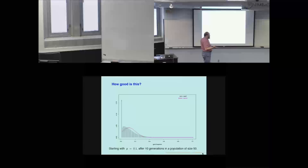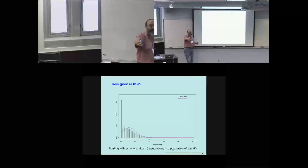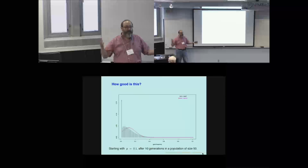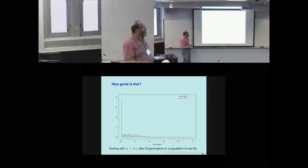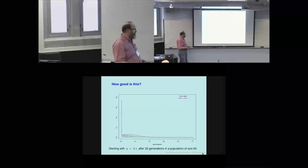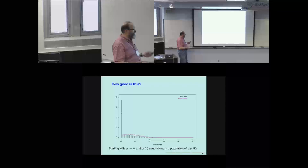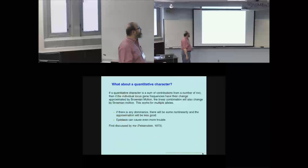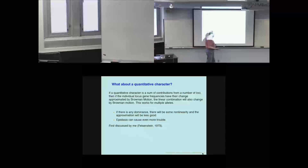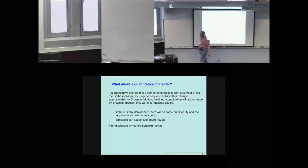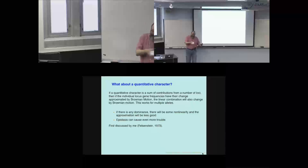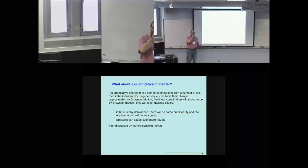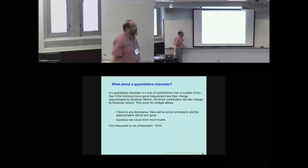We're sort of stuck with Brownian motion because it's the one for which we can calculate transition probabilities, and everything else is either impossible or unbearably tedious. So we can roughly describe the process of change of gene frequency under genetic drift as Brownian motion, as long as it's somewhere in the middle of the scale and doesn't go for too many generations. That's the rough rule.